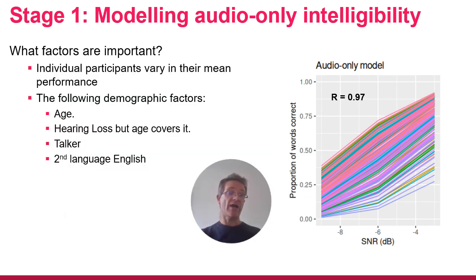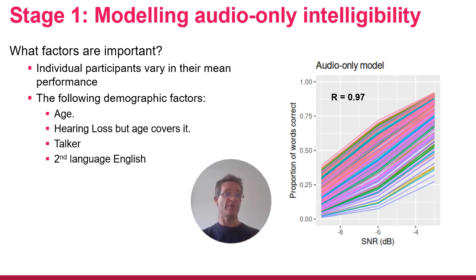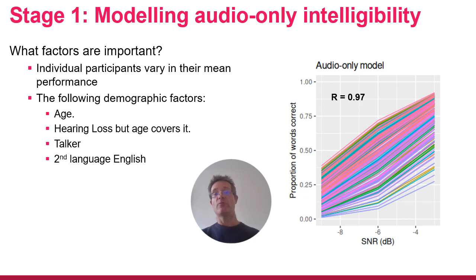What does our model need in order to account for these data? Unsurprisingly, it needs to account for individual variation in participants — effectively this is like a random effects model in a frequentist statistical framework. We also found that the following demographic factors are influential: age, hearing loss (although that's correlated with age and difficult to separate), which talker is talking, and whether or not people are second-language English speakers.